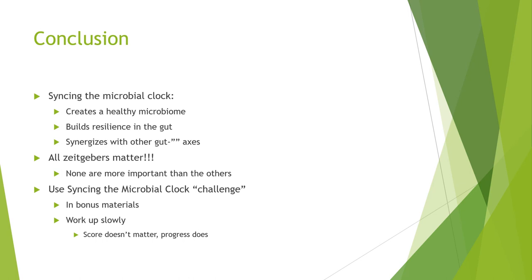Use the syncing the microbial clock challenge. As we have done before with the stop leaky gut challenge, we've built a syncing the microbial clock challenge, found in the bonus materials folder in the OneDrive. We want to use this to really work up slowly — you don't want to just start doing all the things mentioned today, as it's probably going to be way too much stress on your system. So we want to have a scoring system: understand what we're doing and how it's affecting us. There are also symptom lists, and you want to find out the timings. You also want to identify objective measures such as heart rate variability, resting heart rate, continuous glucose monitoring, and hemoglobin A1C.